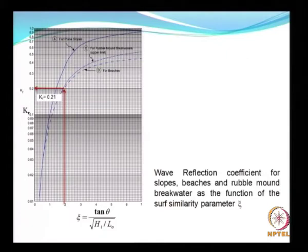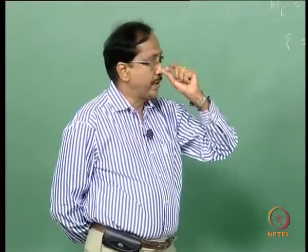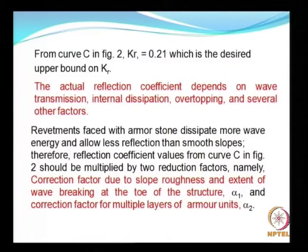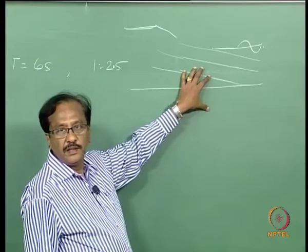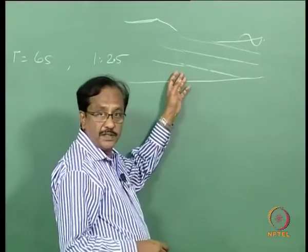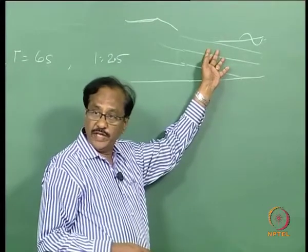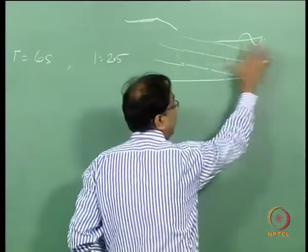This gives only the upper bound. The actual reflection coefficient would depend on wave transmission, internal dissipation, over-topping, and several other factors. For a layered rubble mound structure, the reflection depends on the number of layers, the permeability achieved by placing the stones, and all of these things govern the reflection from the structure.